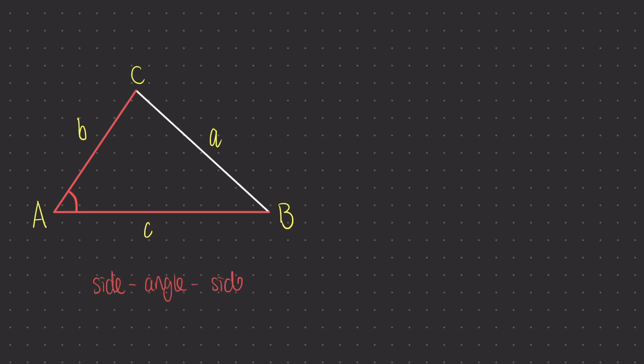In effect, the sides are the bread of the sandwich and the angle is in between — the angle is, of course, the filling. Whenever you see this sort of situation, you should know that you need to use the cosine rule.